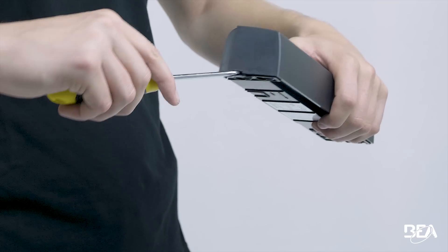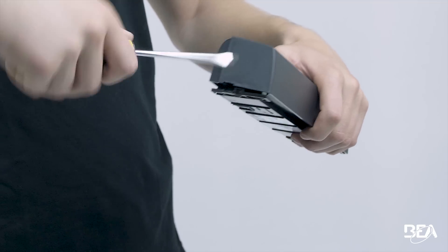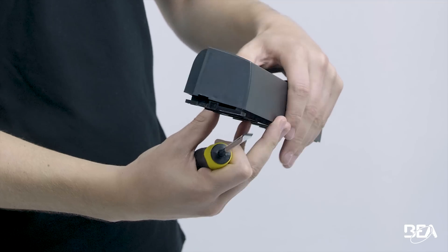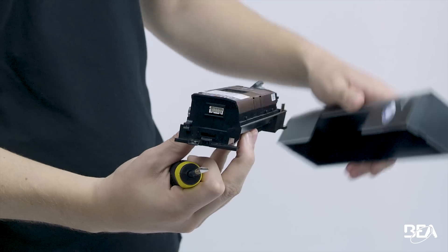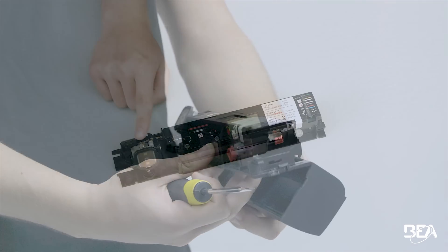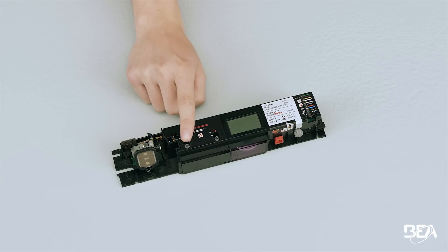To start, unclip the cover by making a levering motion with the screwdriver to discover the inside of the sensor and its components: the radar antenna, the IR curtain width adjustment, the LCD screen, the IR curtain angle adjustment, the adjustment knob, and the wiring.